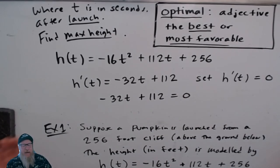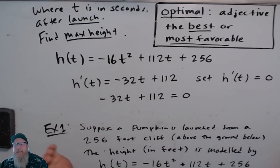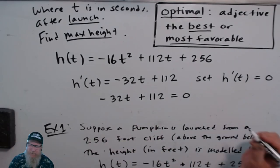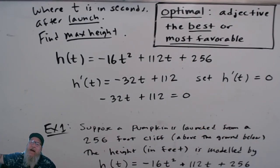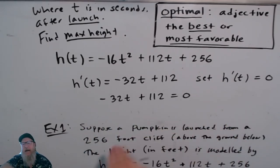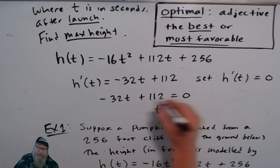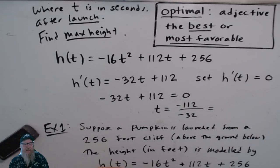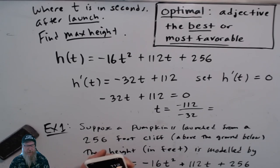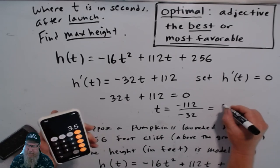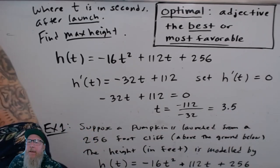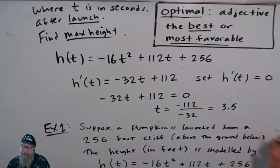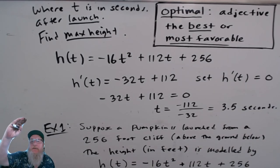If the concavity is concave down, setting the derivative to zero gives a maximum. Clearly the diagram shows concave down behavior, so this will give us the maximum. We subtract 112 and divide by negative 32 — that gives T = 3.5 seconds. So 3.5 seconds is the amount of time required to reach the maximum height.